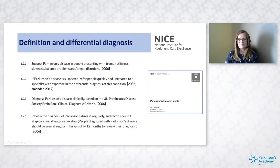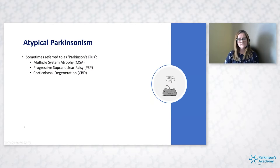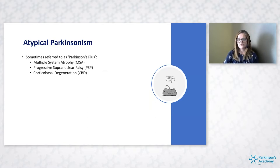Because many of these conditions don't have confirmed tests or scans, we need to review the diagnosis on a regular basis. In Parkinson's it's recommended we review roughly every six to twelve months to look for atypical features. This brings us to atypical parkinsonism — sometimes called Parkinson's plus syndromes. Today we're going to focus on the three major ones: multiple system atrophy (MSA), progressive supranuclear palsy (PSP), and corticobasal degeneration (CBD).